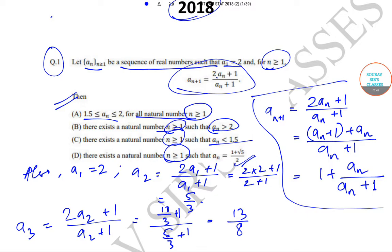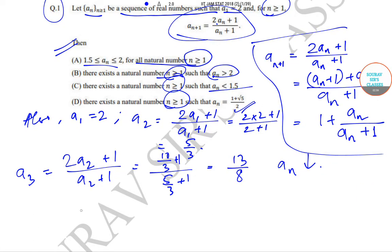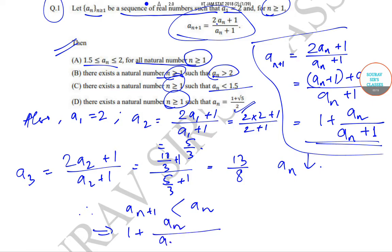So as you can see, as n increases, a_n keeps on decreasing. We can definitely say that a_(n+1) is less than a_n. We have already found that a_(n+1) equals 1 plus a_n upon a_(n+1), and a_(n+1) is less than a_n.